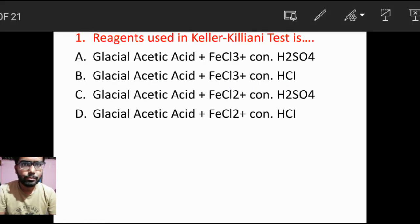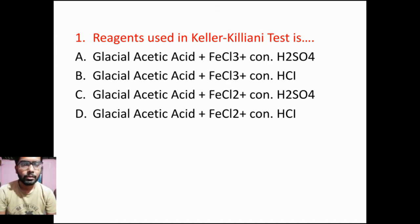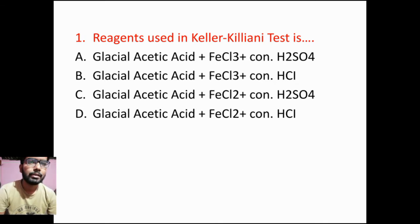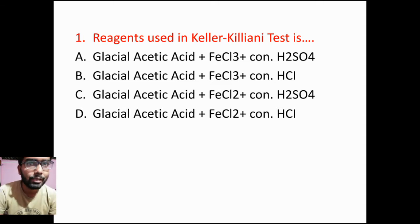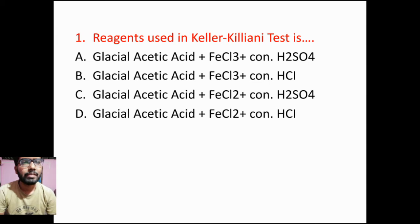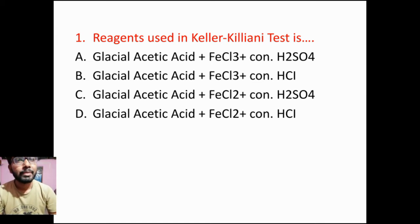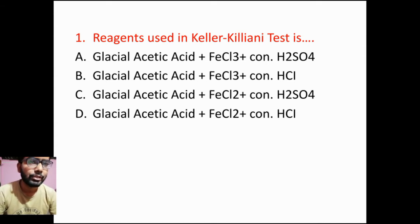First question is: reagents used in Kilian test is. Option A: Glacial acetic acid plus FeCl3 plus concentrated H2SO4. Option B: Glacial acetic acid plus FeCl3 plus concentrated HCl. Option C: Glacial acetic acid plus FeCl2 plus concentrated H2SO4. Option D: Glacial acetic acid plus FeCl2 plus concentrated HCl.